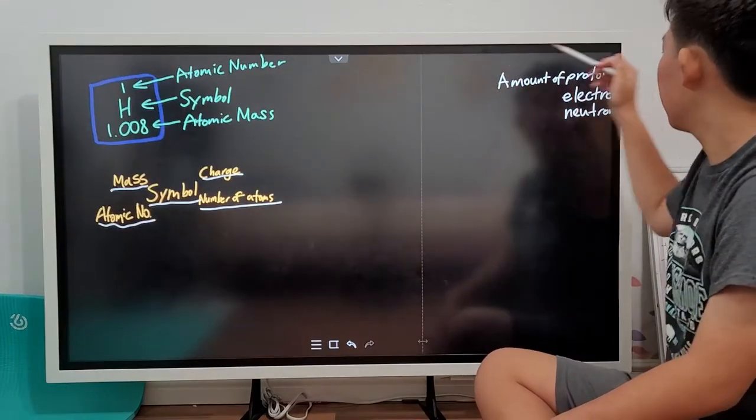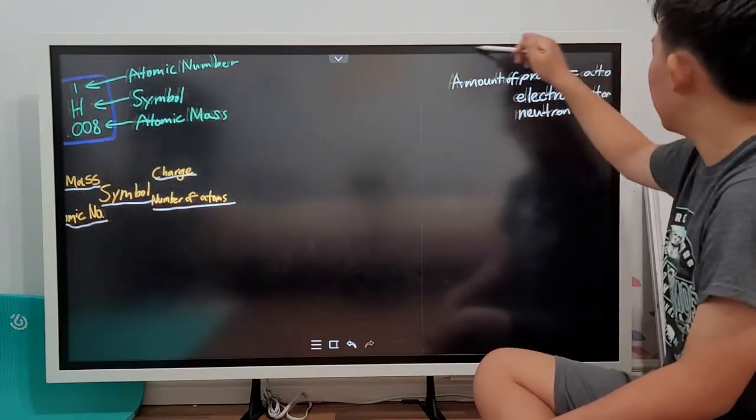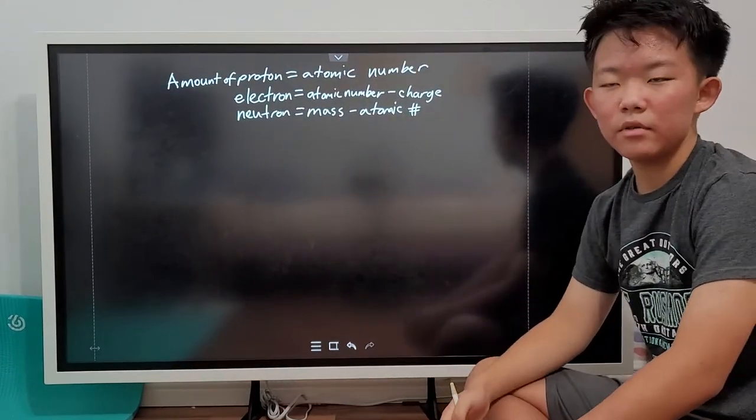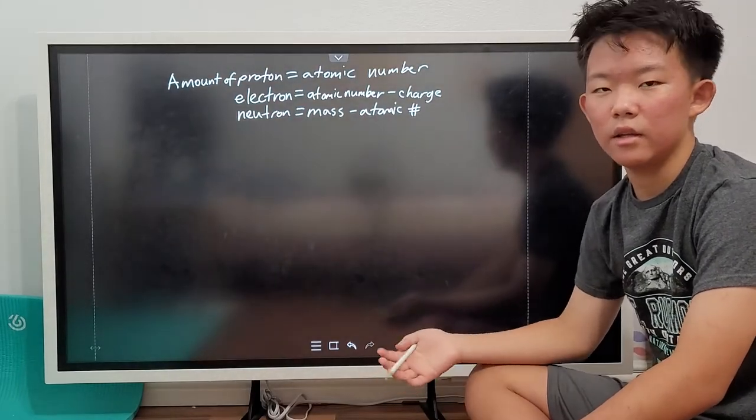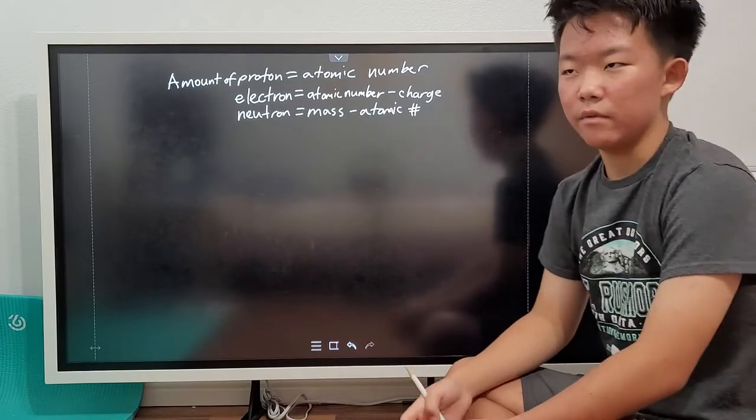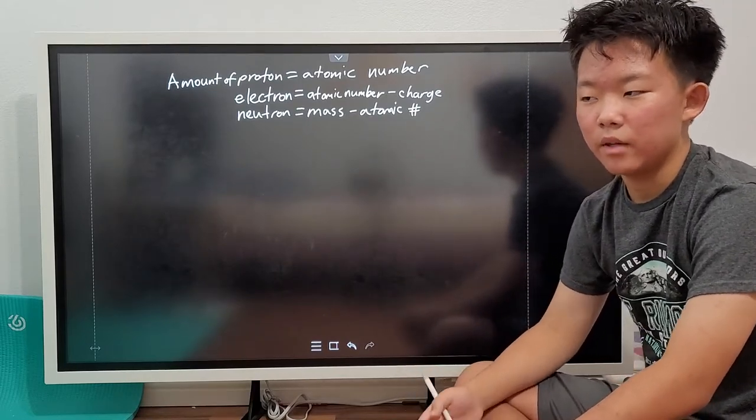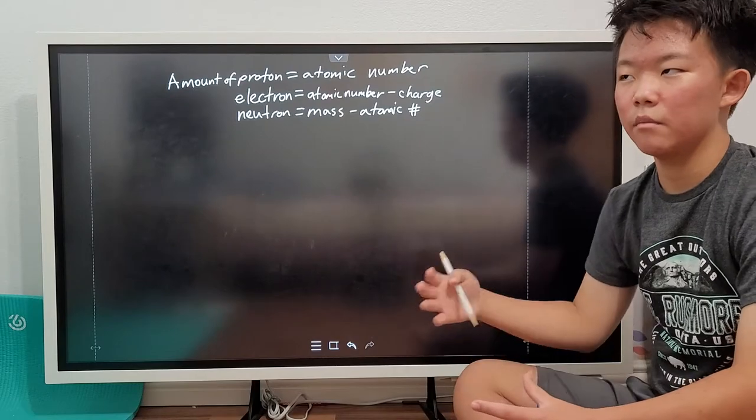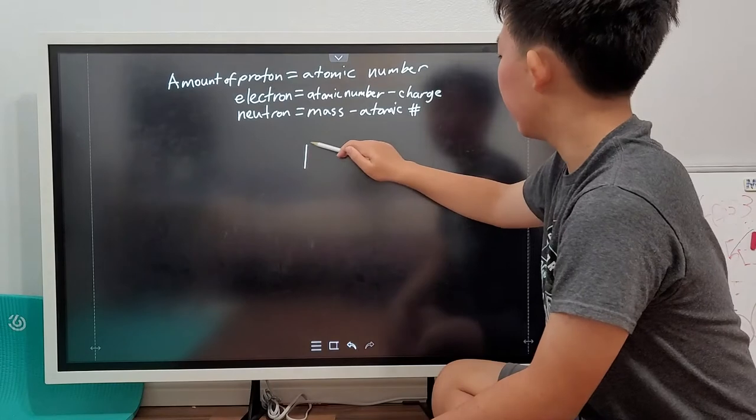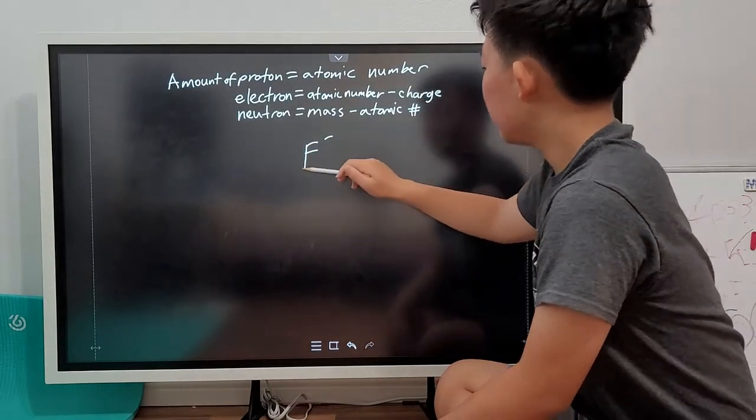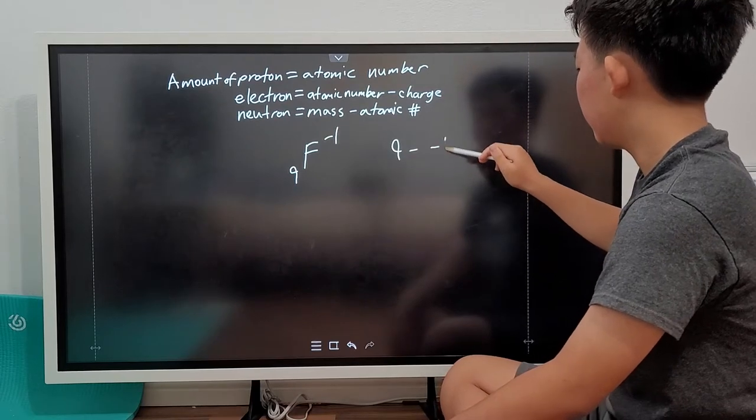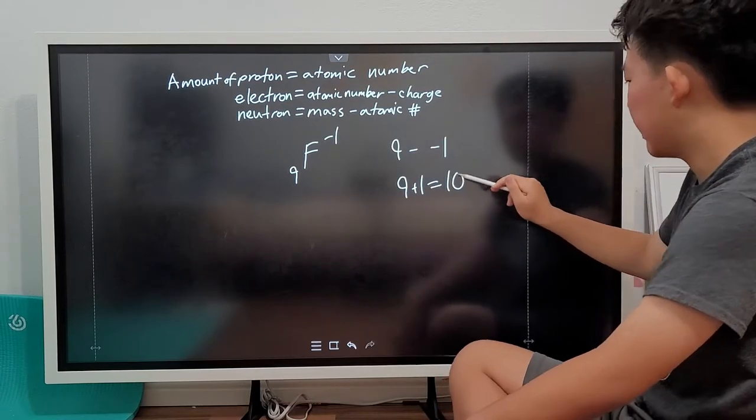So now let's move on and see how many subatomic particles each element has. So the amount of protons an element has is, again, the atomic number of the element. The electrons, however, get a little more complicated because it's the atomic number minus its charge. For instance, for a case of fluoride, fluorine's atomic number is 9, and because the charge is negative 1, 9 minus negative 1 is 9 plus 1, which is therefore 10.